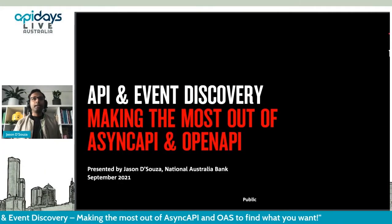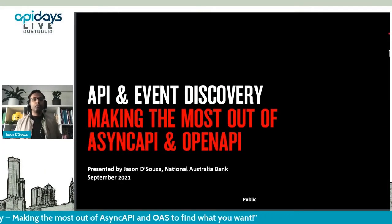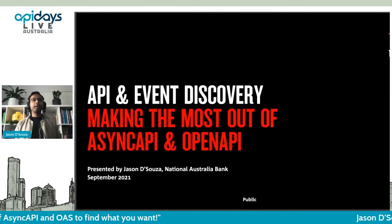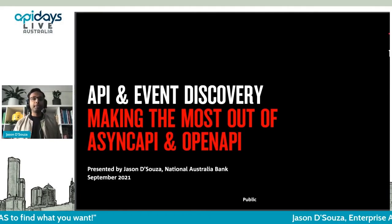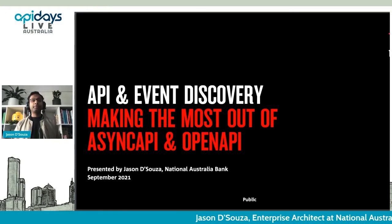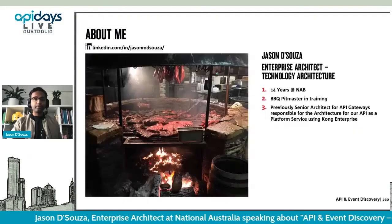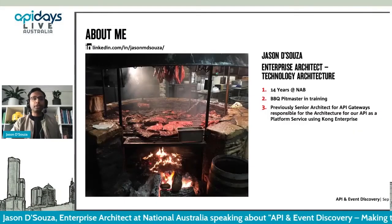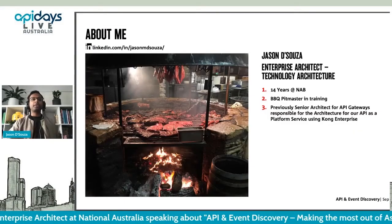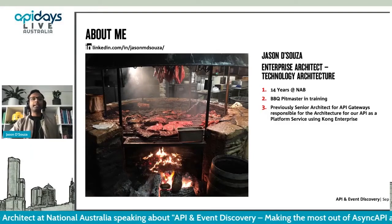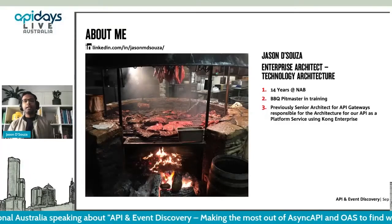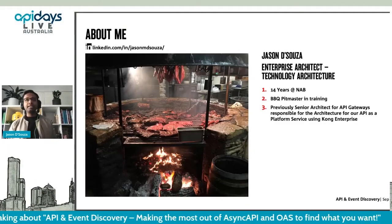About NAB: we're Australia's largest business bank. We work with small, medium, and large businesses. We have more than 30,000 people serving 9 million customers in Australia, New Zealand and around the world. I'm Jason D'Souza, Enterprise Architect for Technology Architecture. I've been at NAB for 14 years.